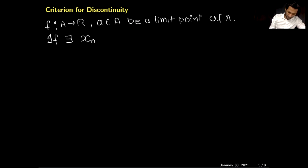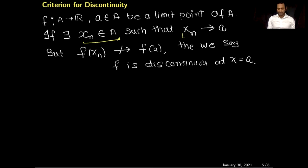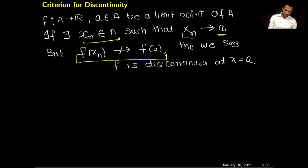The sequential characterization of continuity is typically most useful for demonstrating that a function is not continuous at a point. Next, I will write down the criteria for proving a function is discontinuous. To prove a function is discontinuous, you need to find a sequence xₙ in the domain such that xₙ converges to a, which is a limit point of the set A, but when you plug that sequence into the function, f(xₙ) does not converge to f(a). Then we say the function is discontinuous at x = a.